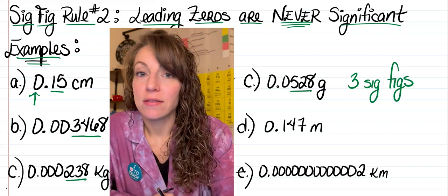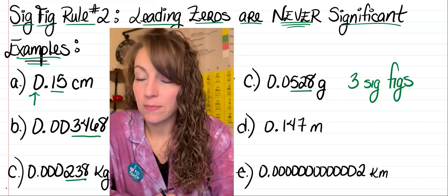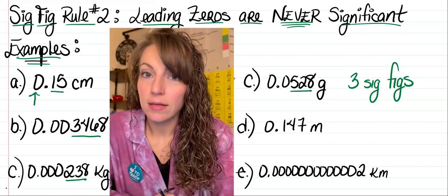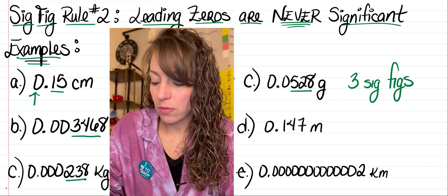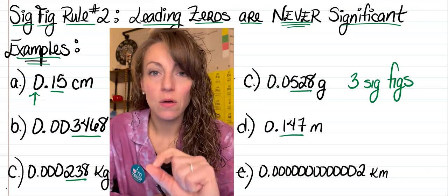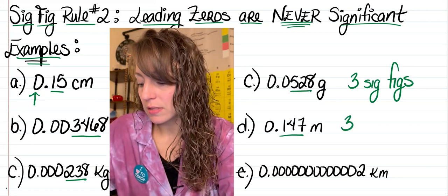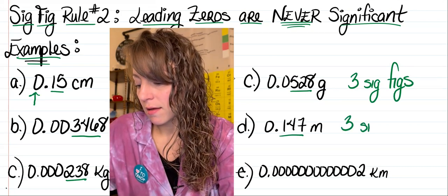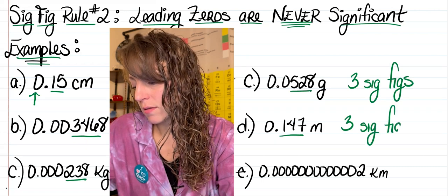In letter D, I've got 0.147 meters. There's one leading zero which we're going to ignore. The one, the four, and the seven are all significant, so once again we've got three sig figs.